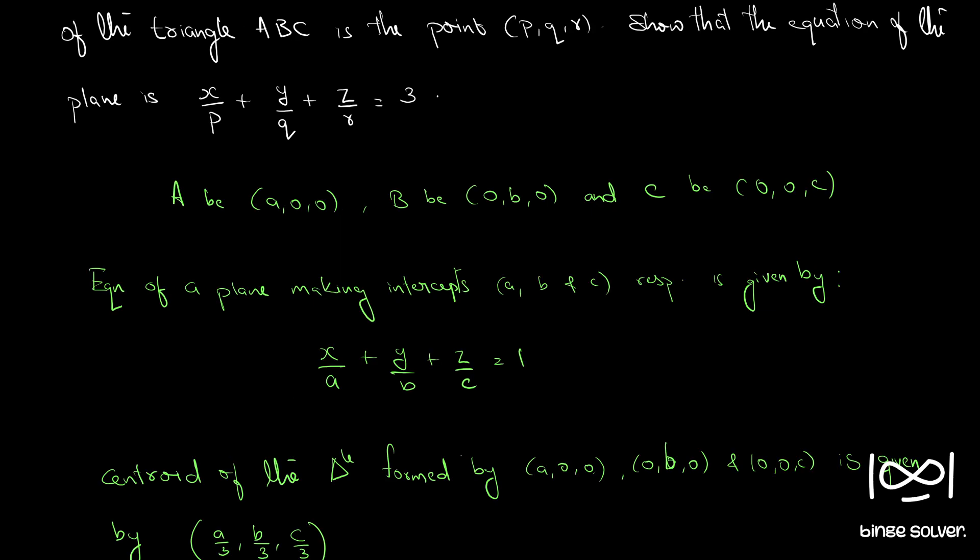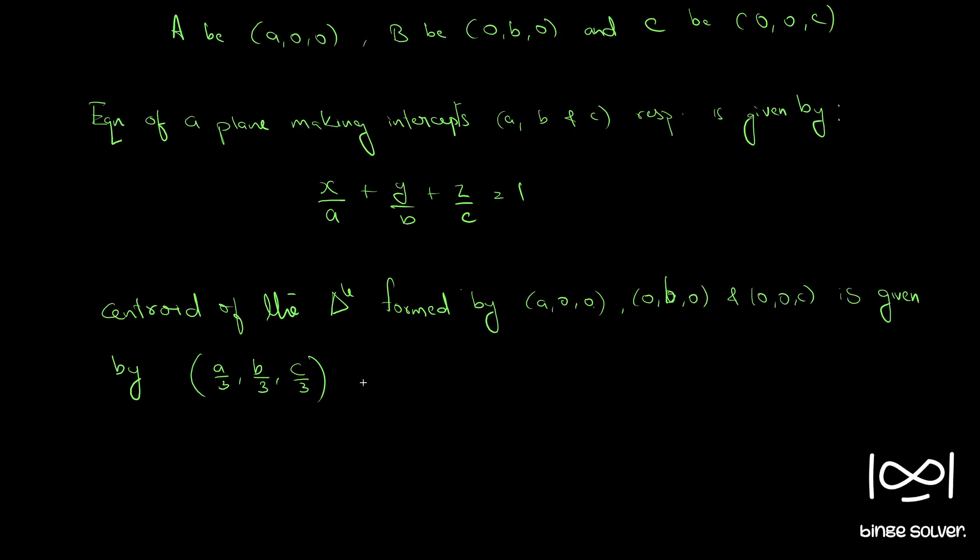Now, it is given that (a/3, b/3, c/3) is nothing but (p, q, r). So that is a = 3p, b = 3q, and c = 3r. Now, let this be equation 1 and this be 2.